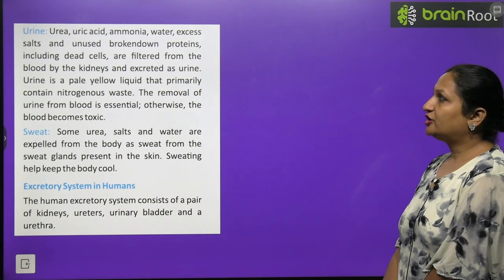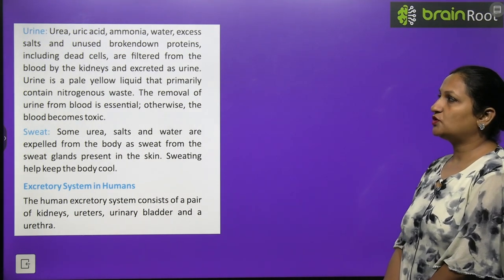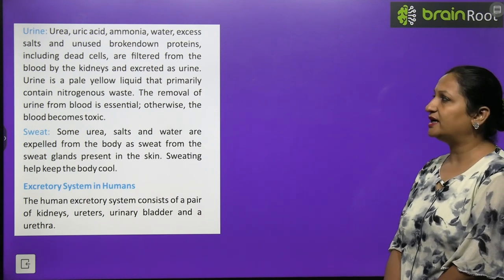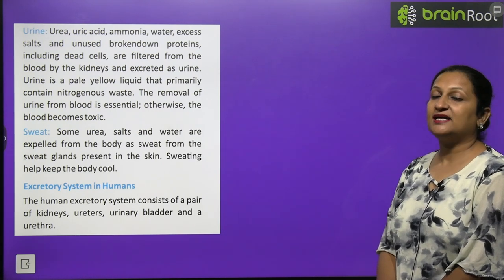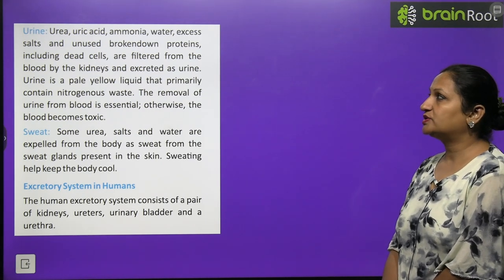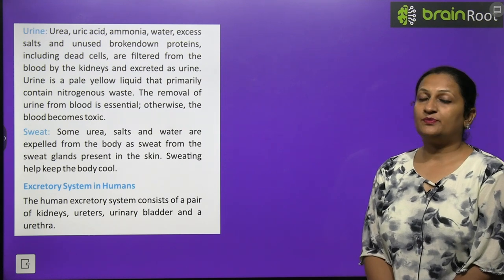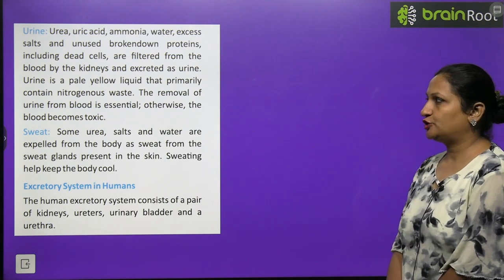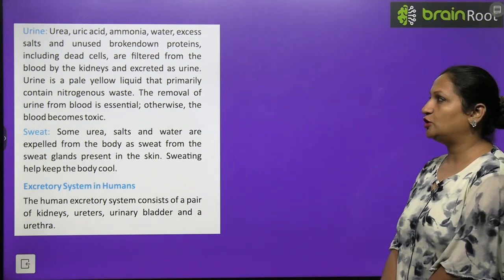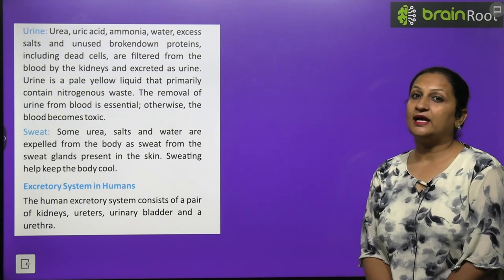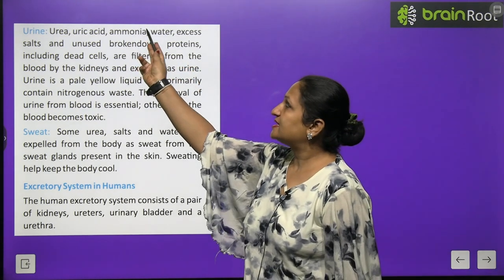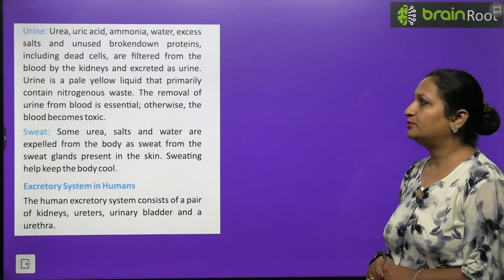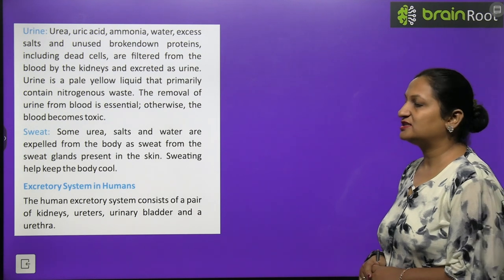Urine contains urea, uric acid, ammonia, water, excessive salt, unused broken-down protein, and dead cells — all filtered from the blood by the kidneys. Urine is a pale yellow liquid containing mostly nitrogenous waste such as urea, uric acid, and ammonia. The removal of urine from the body is essential; otherwise the blood becomes toxic.